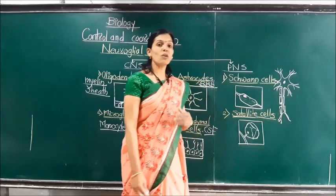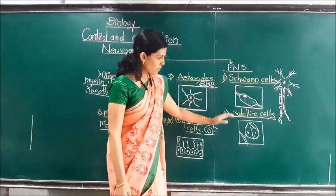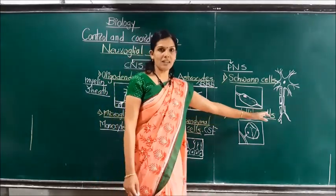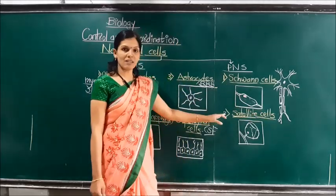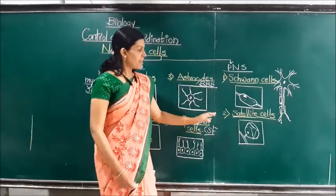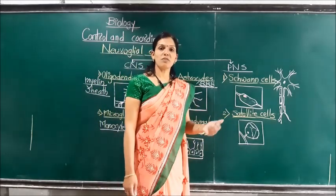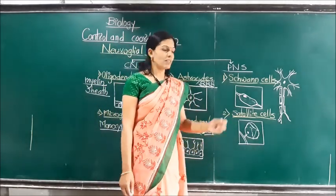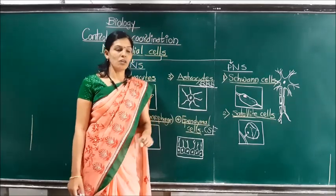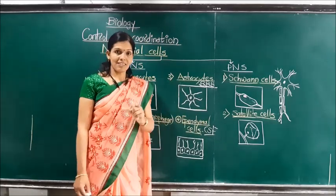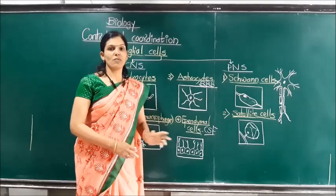The myelin sheath formed by Schwann cells helps in the quick transfer of nerve impulses. The other PNS neuroglial cells are satellite cells. Satellite cells perform various supportive functions: they provide cushioning protection to the nervous system, acting like a cushion, and they also provide nutrition to the nervous system.